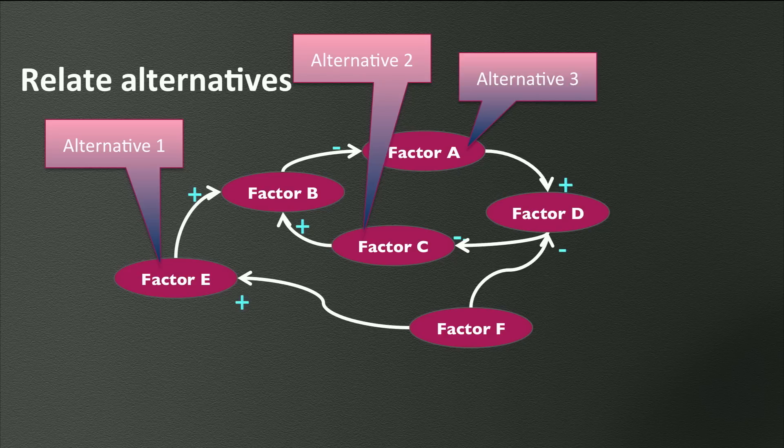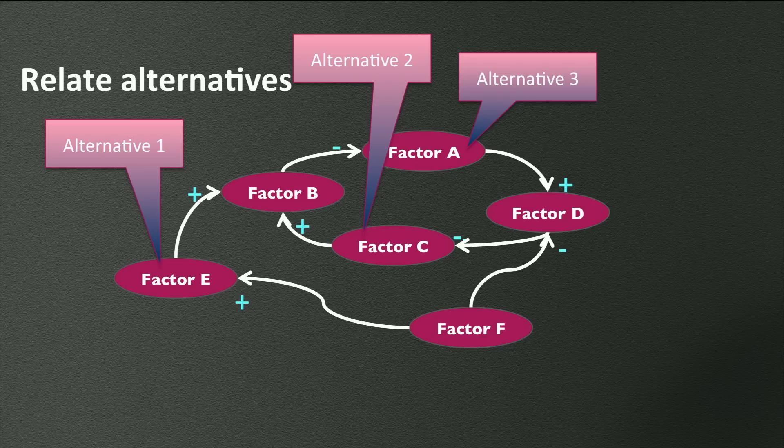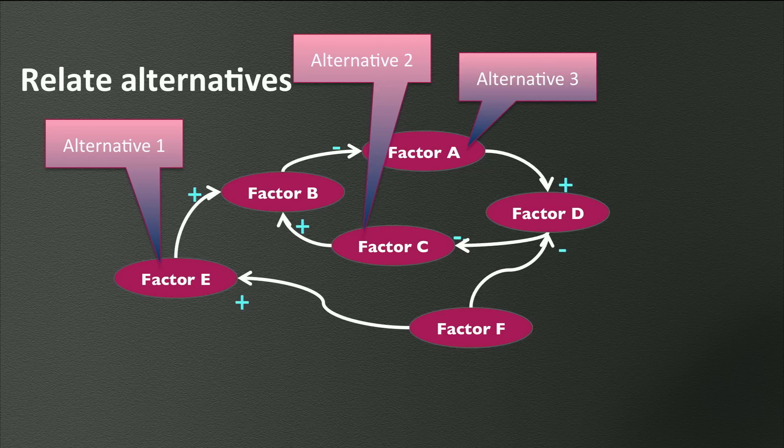Imagine that the criteria represent everything that the actors involved in the problem field consider important. That means that anything influencing a factor in the causal diagram, and thus influencing the criteria via the causal relations, can be an alternative.